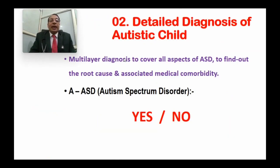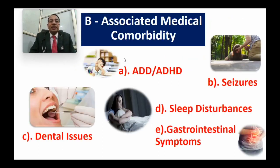Detailed diagnosis should be multi-layer to cover all aspects of ASD and find out the root cause and associated medical comorbidity. First, decide whether your child has ASD or not. Second, check for associated medical comorbidity like ADD, ADHD, seizure, sleep disturbances, gastrointestinal problems like diarrhea, constipation, pain in abdomen, or any dental issues.